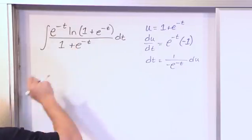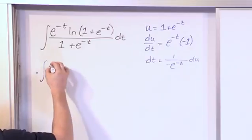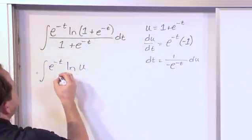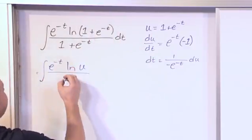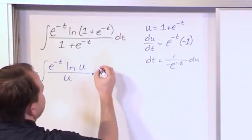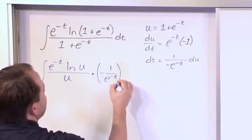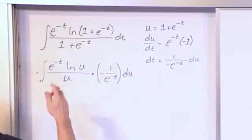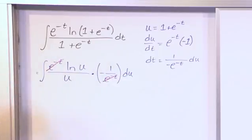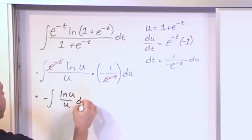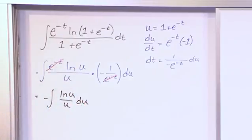So we put this into the integral along with our substitution. We have e to the minus t, then the natural log of u — since we defined 1 + e^(-t) to be u — and on the bottom this whole thing just becomes u. Then dt becomes negative one over e to the minus t, du. The e to the minus t cancels with e to the minus t, so we rewrite the integral as negative integral of natural log of u over u, du. We've certainly simplified the integral quite a bit, got it all in terms of u, and canceled everything — so we're probably on the right track.